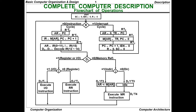The flowchart starts with the sequence counter set to zero, IEN set to zero, and R set to zero. The interrupt enable flag IEN equals zero means there is no interrupt. R set to zero means we can start the instruction cycle. Here, R decides whether to go to the instruction cycle or the interrupt cycle — when R equals zero, it is the instruction cycle.